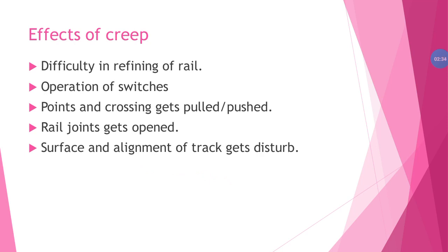Second, operation of switches — creep affects the operation of switches. Third, points and crossings get pulled and pushed — in creep, points and crossings either get pulled or pushed out. Fourth, rail joints get opened. This is simply the explanation for the effects of creep. Thanks for watching.